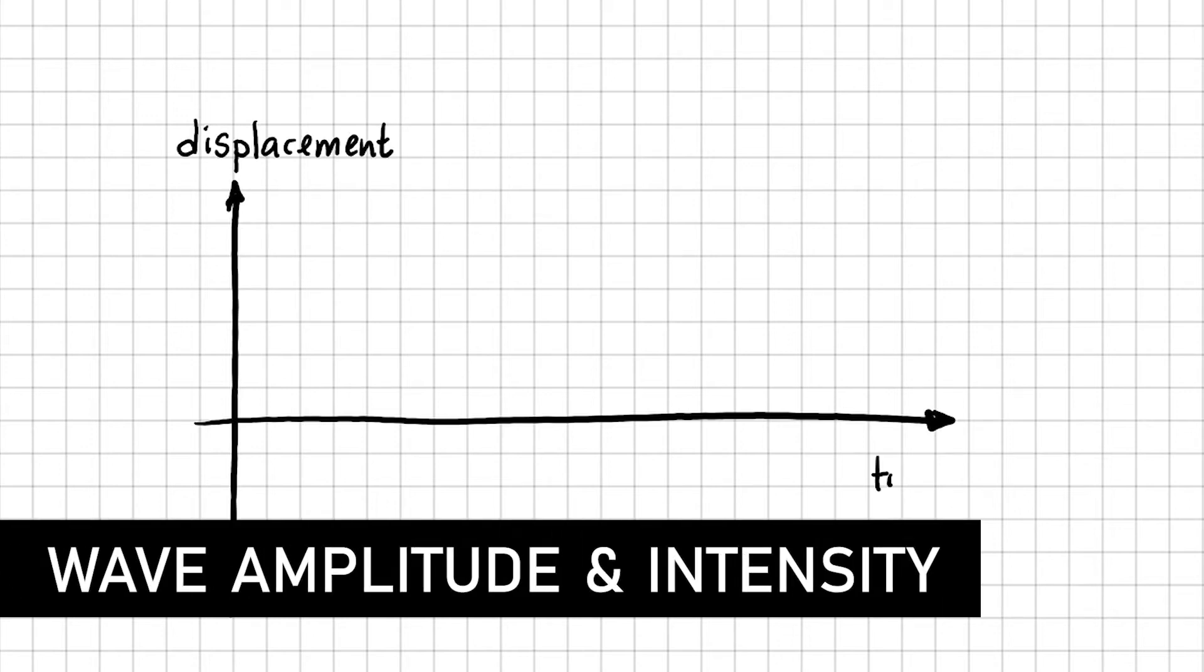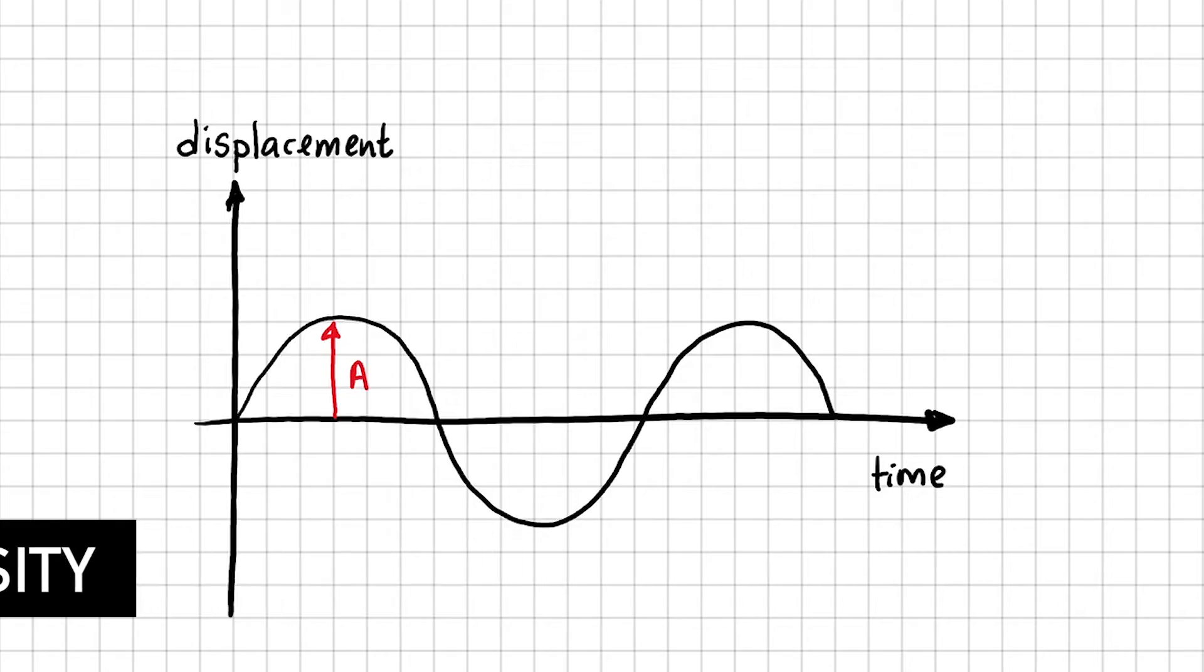Here's a displacement time graph for a wave. I'll mark out the amplitude A. Amplitude is defined as the maximum displacement of a wave particle from the equilibrium position.